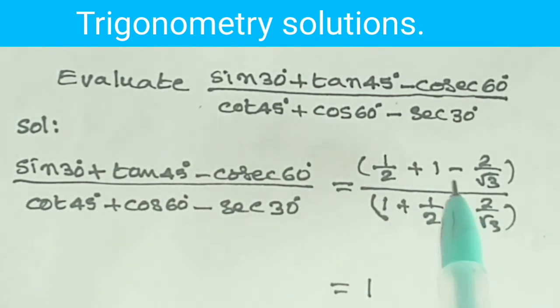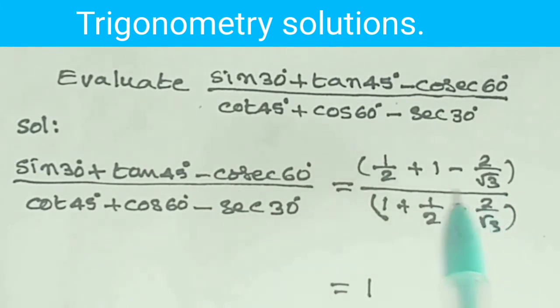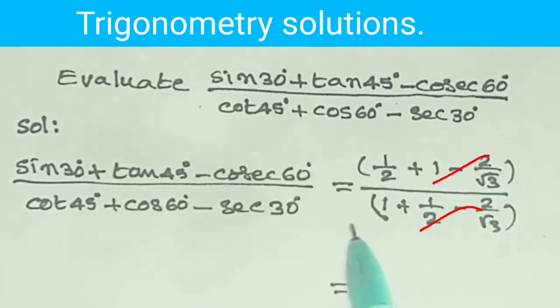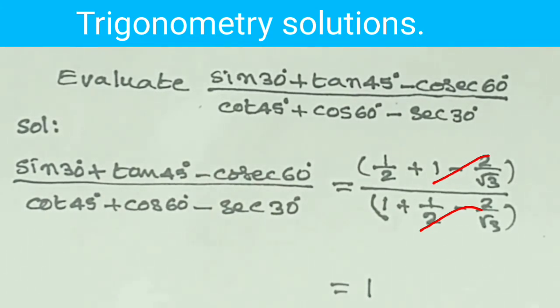Observe that both numerator and denominator are equal. Cancel numerator and denominator — we will get 1.